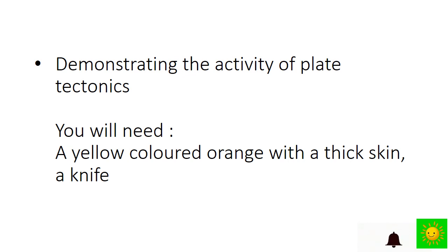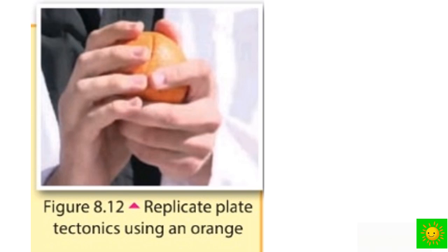We are going to do a small activity at the end of the lesson: demonstrating the activity of plate tectonics. You will need a yellow orange with a thick skin and a knife. Cut the orange with the skin into different shapes. Keep the orange between two palms, then slowly press the orange while observing the movement of the peels. Now you understand that the earth's crust where we live is not an immovable thing. Thank you. This is what we learned about the nature of the earth. Our next lesson is the ninth one: light. Thank you.